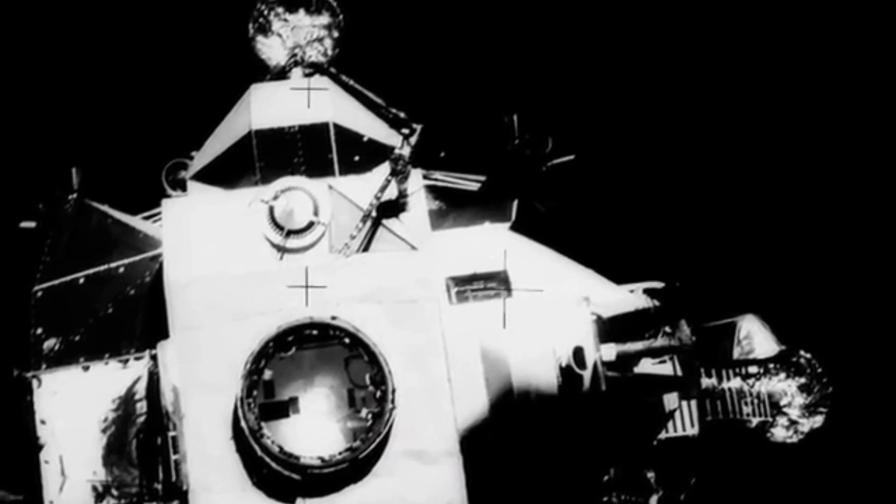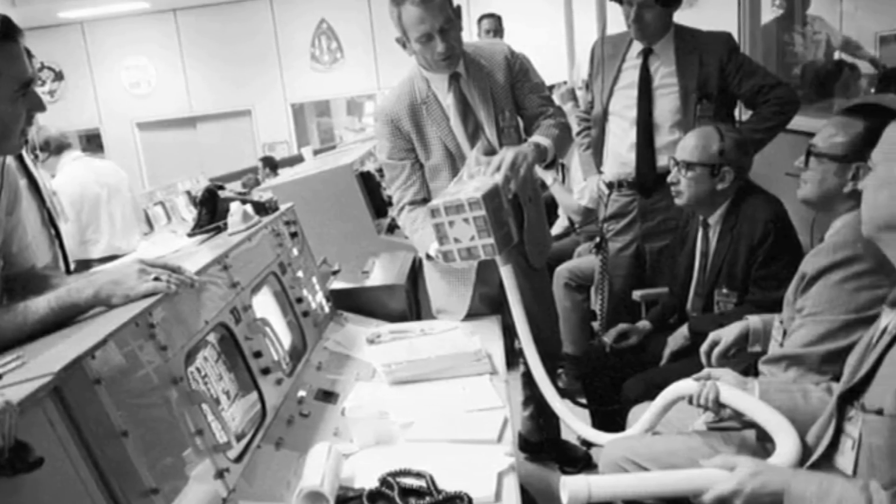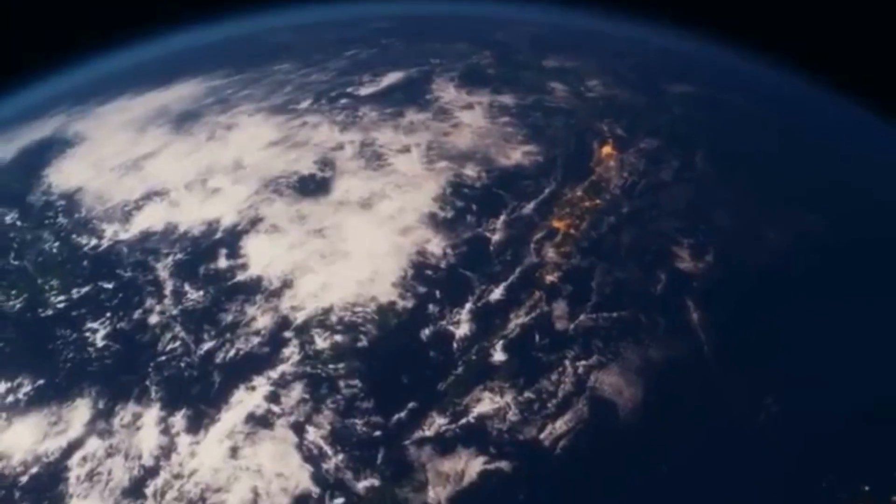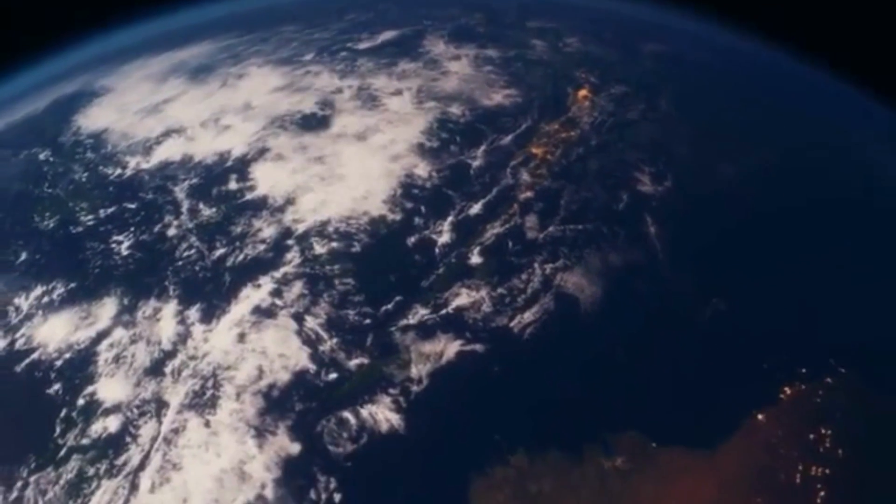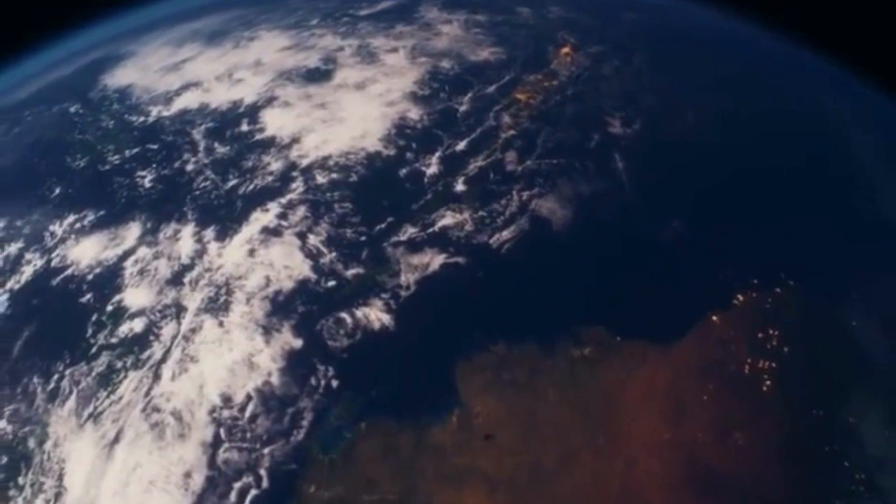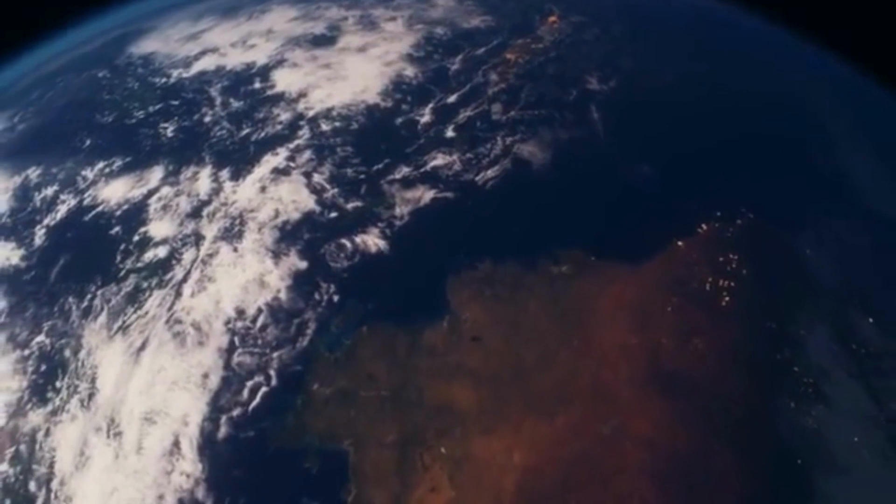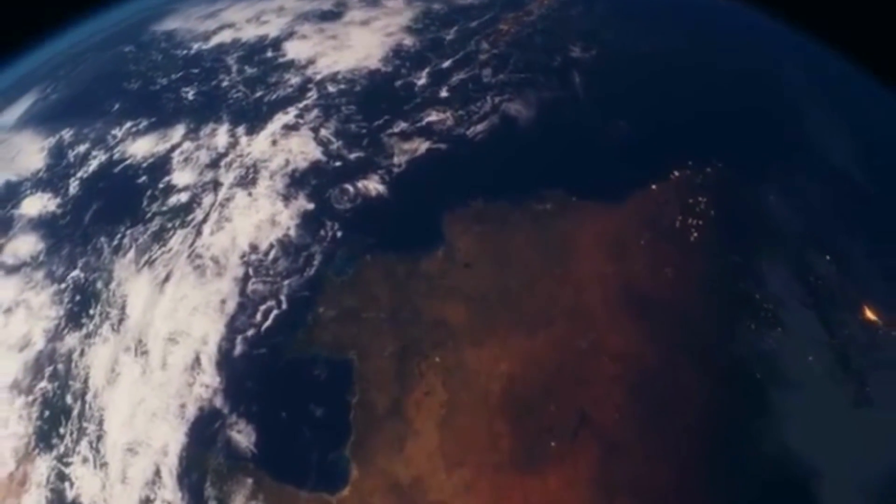14. The furthest humans have traveled from Earth is during the Apollo 13 mission in 1970, which reached a distance of about 248,655 miles, 400,171 kilometers from Earth.